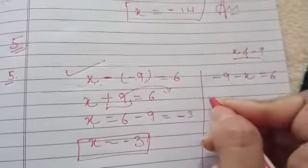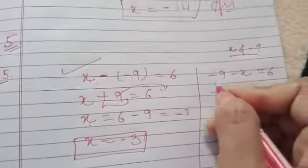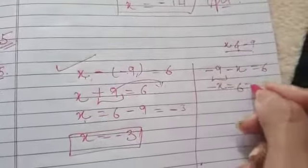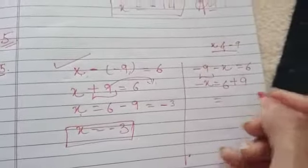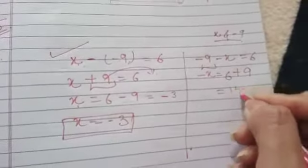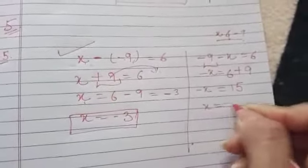Again it's an equation, to solve it, write -x as it is, 6 as it is, take this -9 to another side, it becomes +9. 9 plus 6 becomes 15. -x equals to 15, x equals to -15.